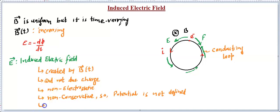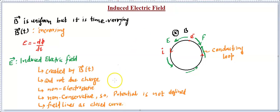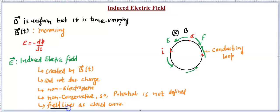Another important difference from the electrostatic field is that the field lines of the induced electric field are closed curves. They do not originate from any point, neither do they terminate at any point — which was the property of electrostatic field lines. To summarize the key differences: this field is non-electrostatic, produced by a time-varying magnetic field, not produced by charge, non-conservative, potential cannot be defined, and its field lines are in the form of closed curves.